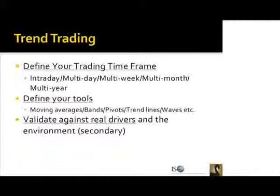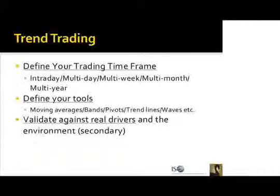Some people can take a simple model that's worked for them, give it to somebody else, and it wouldn't work at all — because the other person just doesn't have confidence and therefore doesn't trade it with discipline. So keep that in mind. One of the things you can use in the currency market to help align your trend trading is to validate your trend with some real drivers and what's going on in the environment. These are secondary items — price is always the primary driver in a trend trading model. But in the currency markets, you can look at real fundamentals and the environment to bring a little more confidence to your trend trading model.